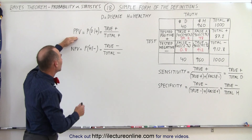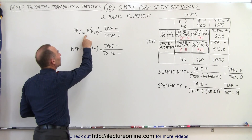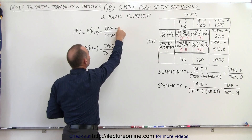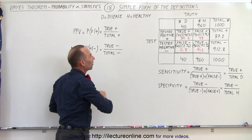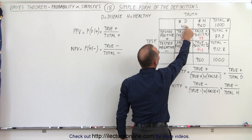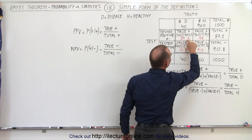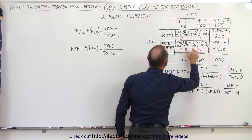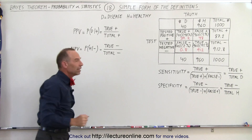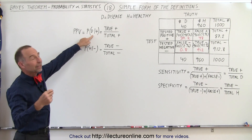Over here we have the PPV, the Positive Predictive Value, which, by the way, is the same as the probability that if you test positive, you actually have the disease. That is defined by the ratio of the true positives divided by the total number of positives. So in this case, the true positives are the 39.2, or 98% of the 40, that test positive and actually have the disease. The total number of positives includes the true positives and the false positives, so 39.2 divided by 87. That is, by definition, the PPV — meaning if you test positive, that's the probability that you have the condition.